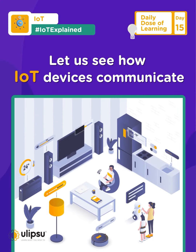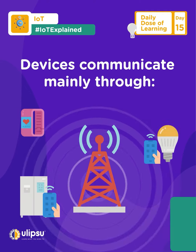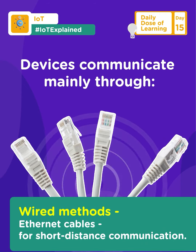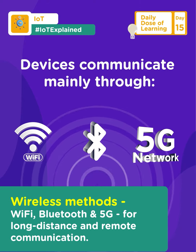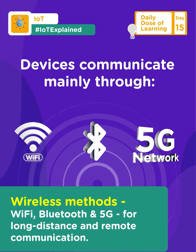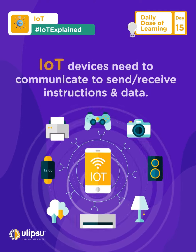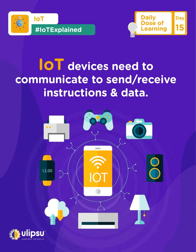Let us see how IoT devices communicate. Devices communicate mainly through wired methods, such as ethernet cables, for short distance communication, and wireless methods like Wi-Fi, Bluetooth, and 5G for long distance and remote communication. IoT devices need to communicate to send and receive instructions and data.